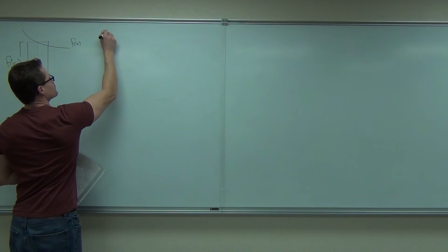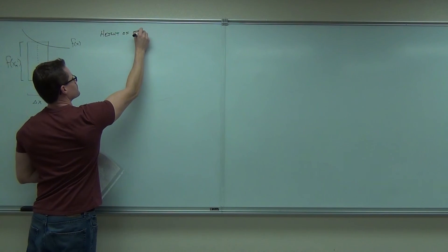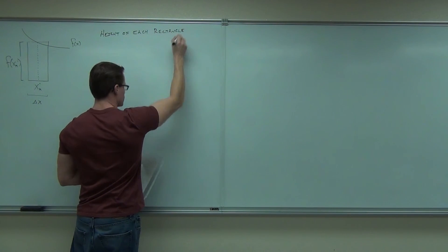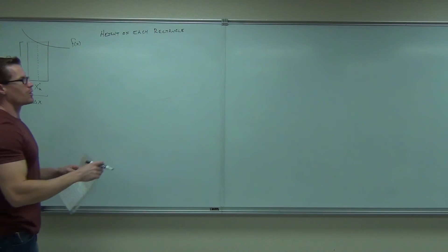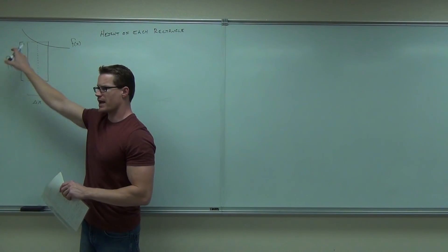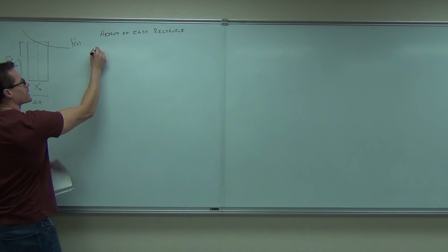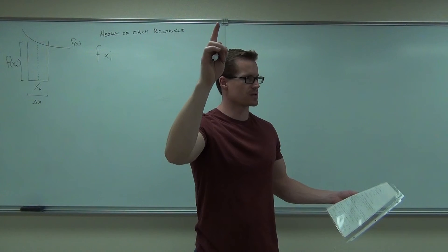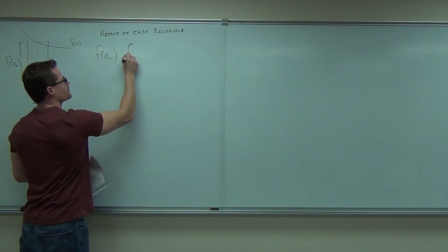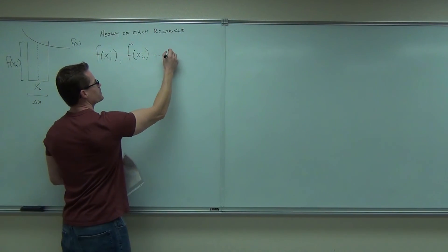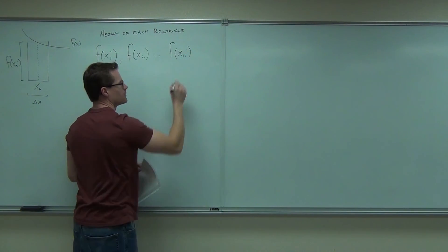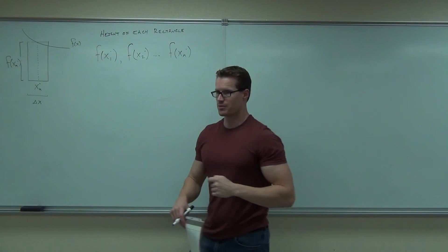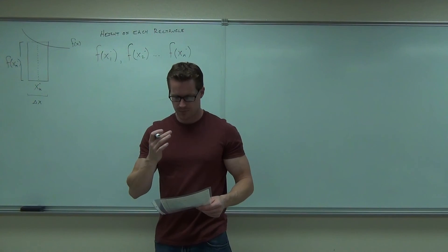Let's talk about the height of each rectangle. The height of the first rectangle would be f of x₁* — whatever the first arbitrary point is, we go up to that height. The second one would be f of x₂*, and so on, all the way to f of xₙ* for the last arbitrary point, which is somewhere between x sub N minus 1 and B. That gives us n rectangles — exactly what we want.